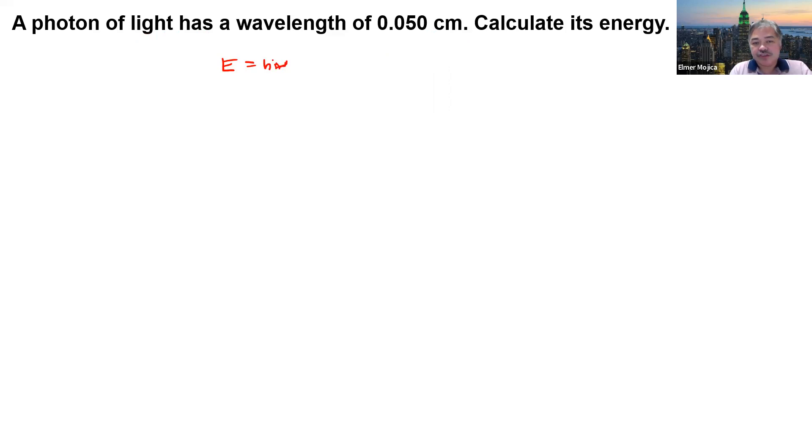Energy equals Planck's constant times frequency, and we know speed of light equals frequency times wavelength. So we put frequency on one side, so this now becomes hc over the wavelength. So we replace...